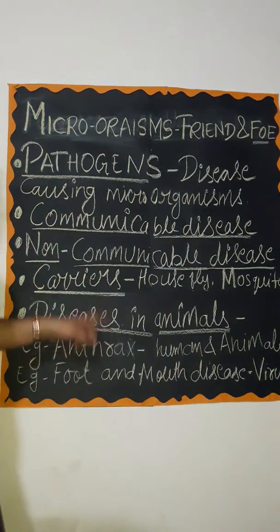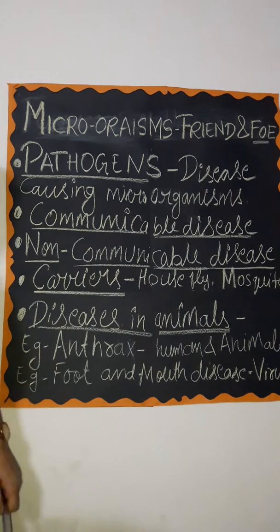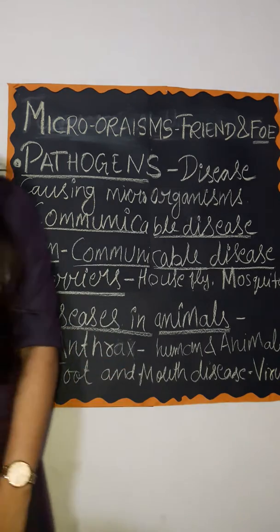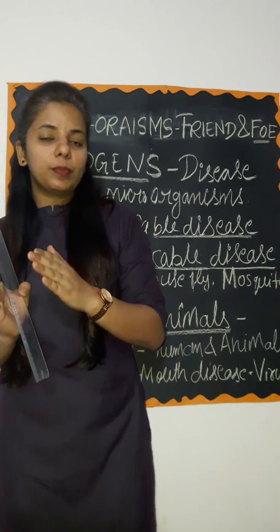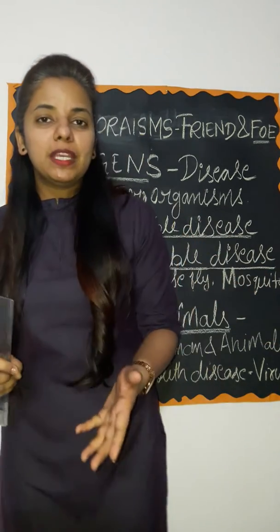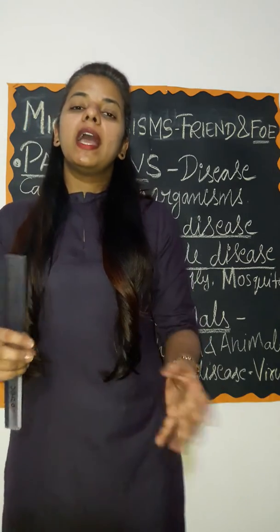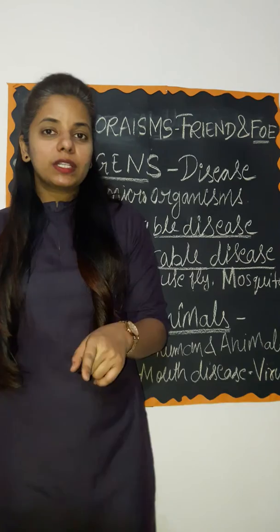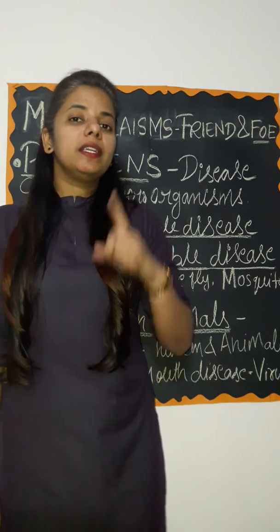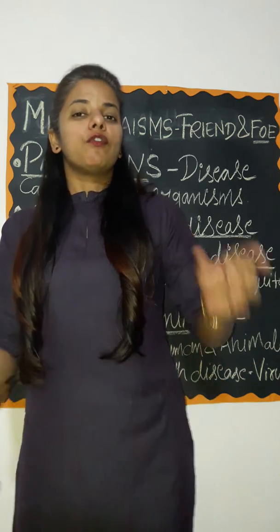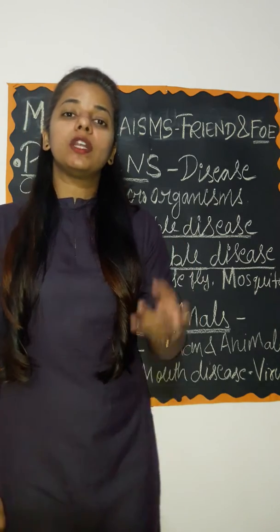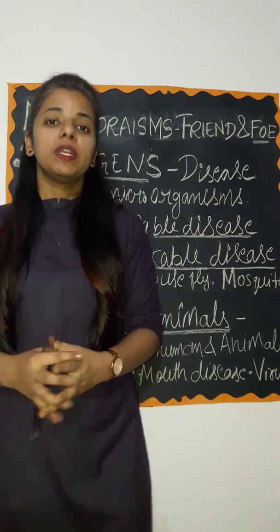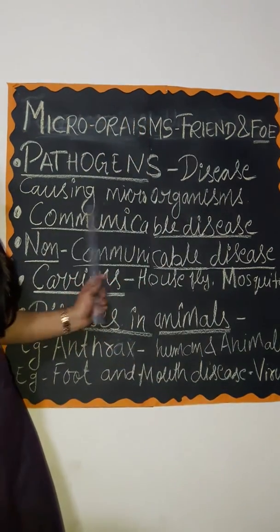There are two types of diseases: communicable disease and non-communicable disease. Communicable diseases are diseases which can be transferred from an infected person to a healthy person by means of air, water, food, and physical contact.